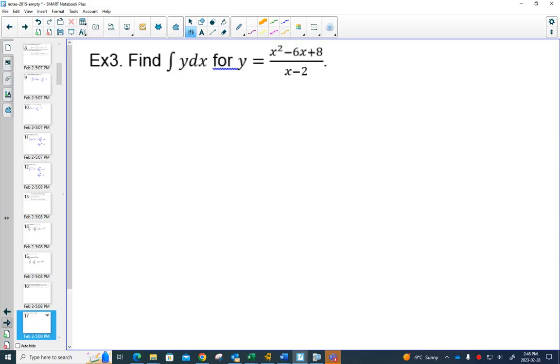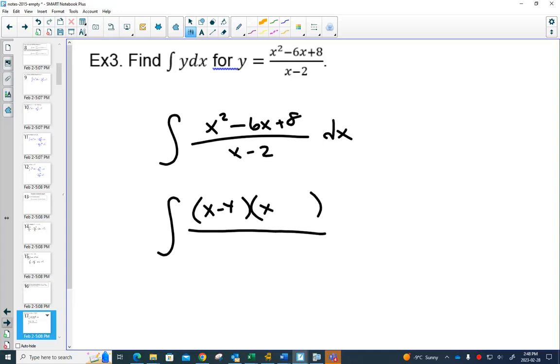There isn't a quotient rule for integration. So how do we do this? How do we find the integral of x squared minus 6x plus 8 over x minus 2 with respect to x? So you have to manipulate this. You might notice, I think I could factor this. And then x minus 2s cancel. Then you're just integrating x minus 4. So the integral of x, add 1 to the exponent and divide, the integral of the minus 4, plus C.